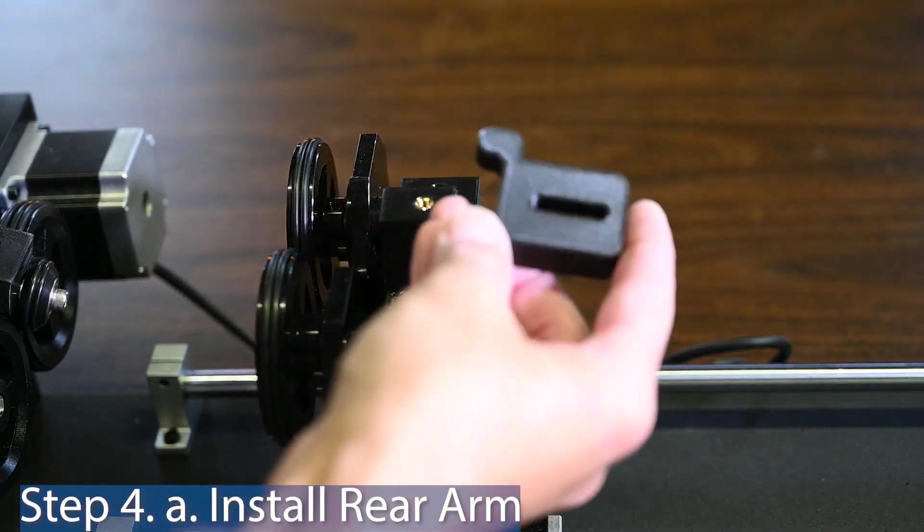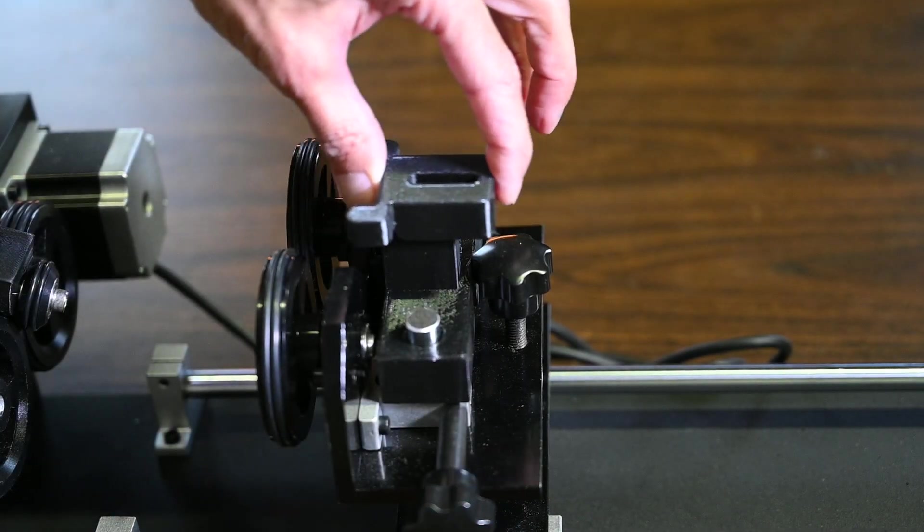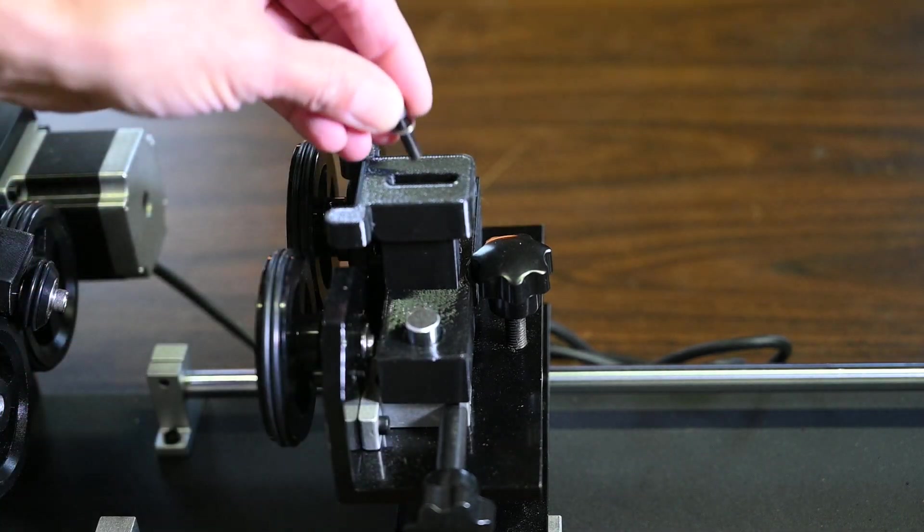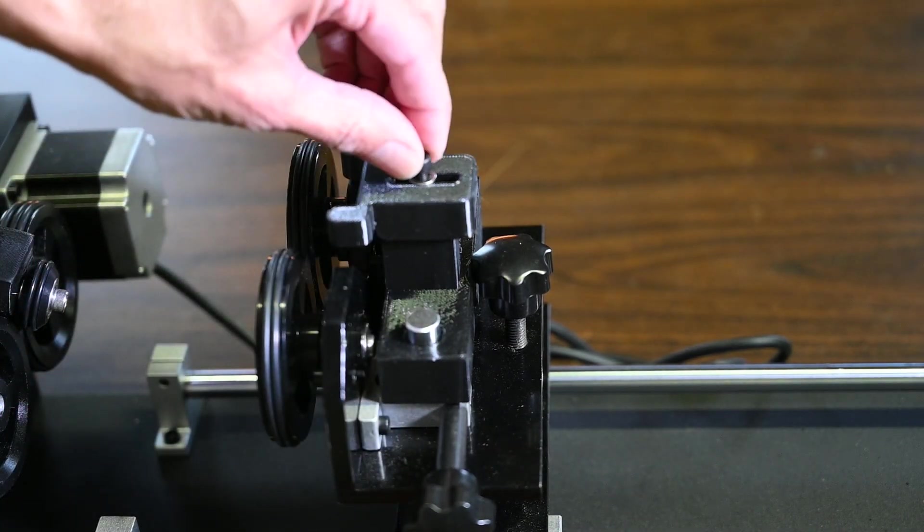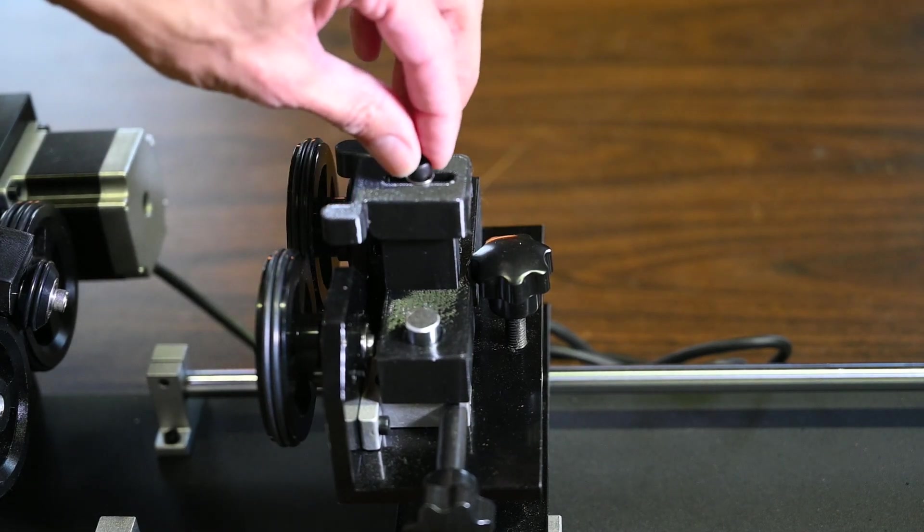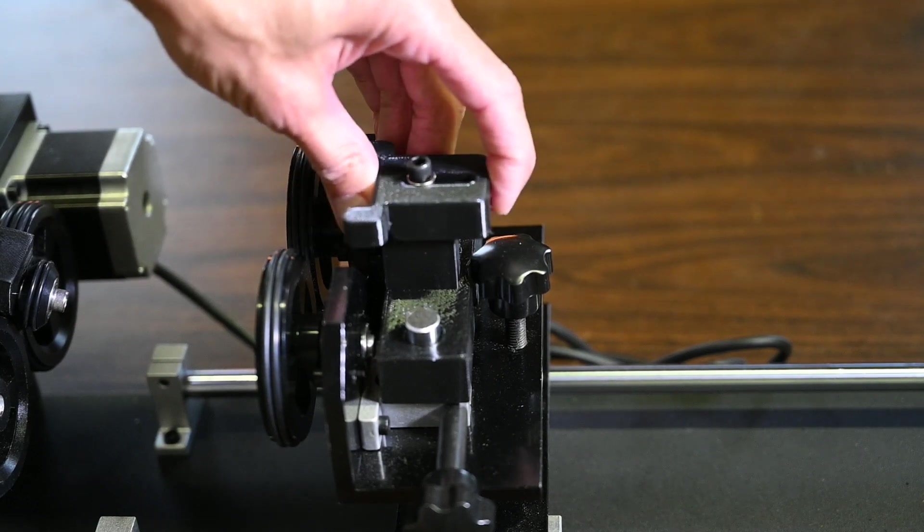The final stage is to put on the rear arm. This just sits on top of the rear base plate and it will slide back and forth. And the bolt in the final bag will go into the threaded insert. This will always just be tightened finger tight so that you have the ability to slide this back and forth.